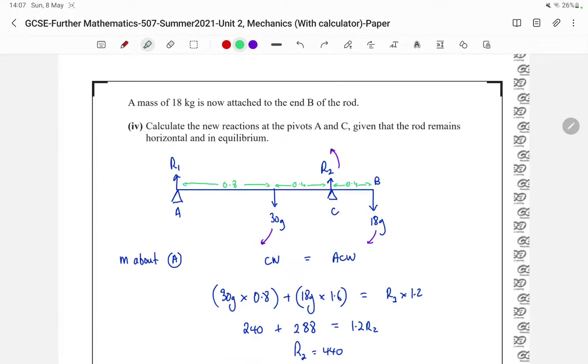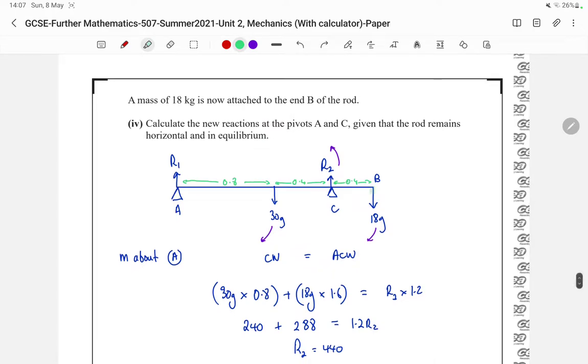Part 4, a mass of 18kg is now attached to the end. So I've done another sketch, but this time I'll have an arrow going down with a weight of 18g.